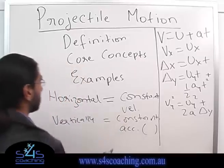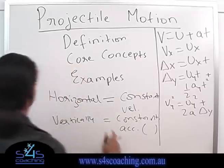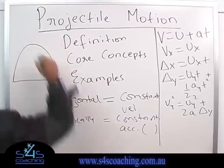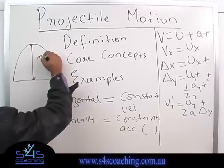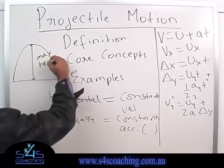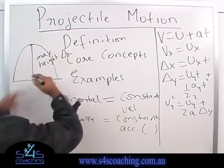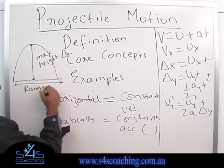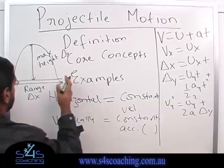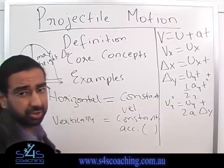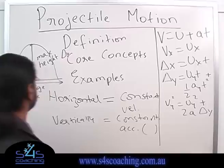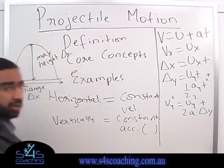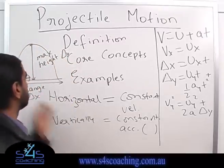Now, just a couple of the key terms of a projectile. The simplest example is a projectile launched from the ground, goes up and comes down. This is the maximum height, also called delta y, because that's how much it moves in the y direction. This is the range, also called delta x, because that's how much it moves in the x direction. The other thing we look at is the time of flight — how long it takes to go all the way up and then come all the way down.